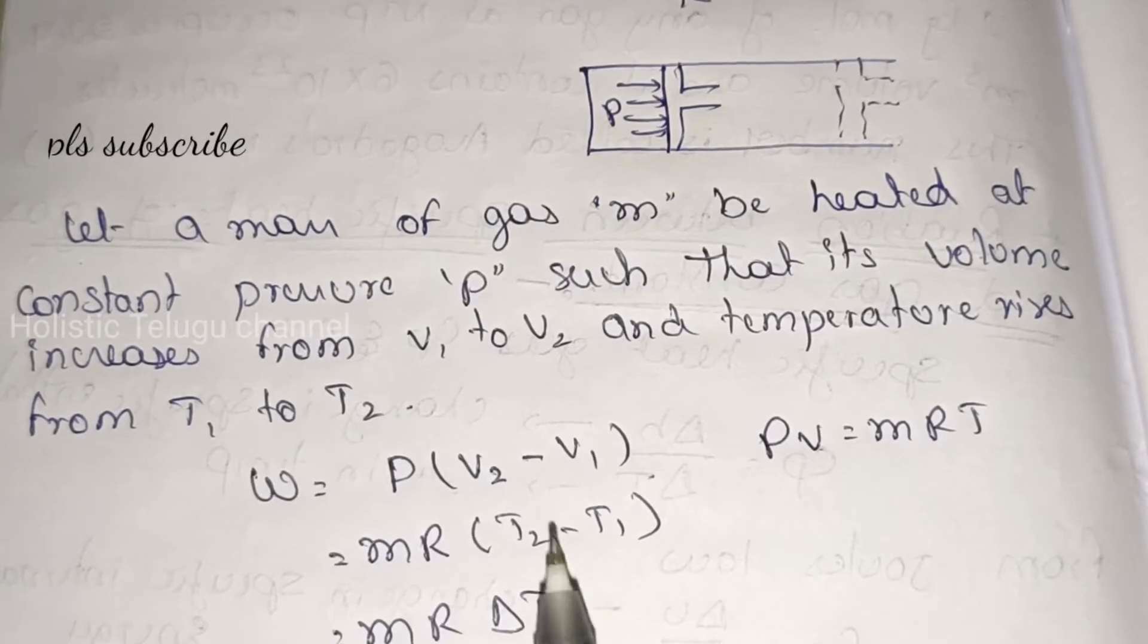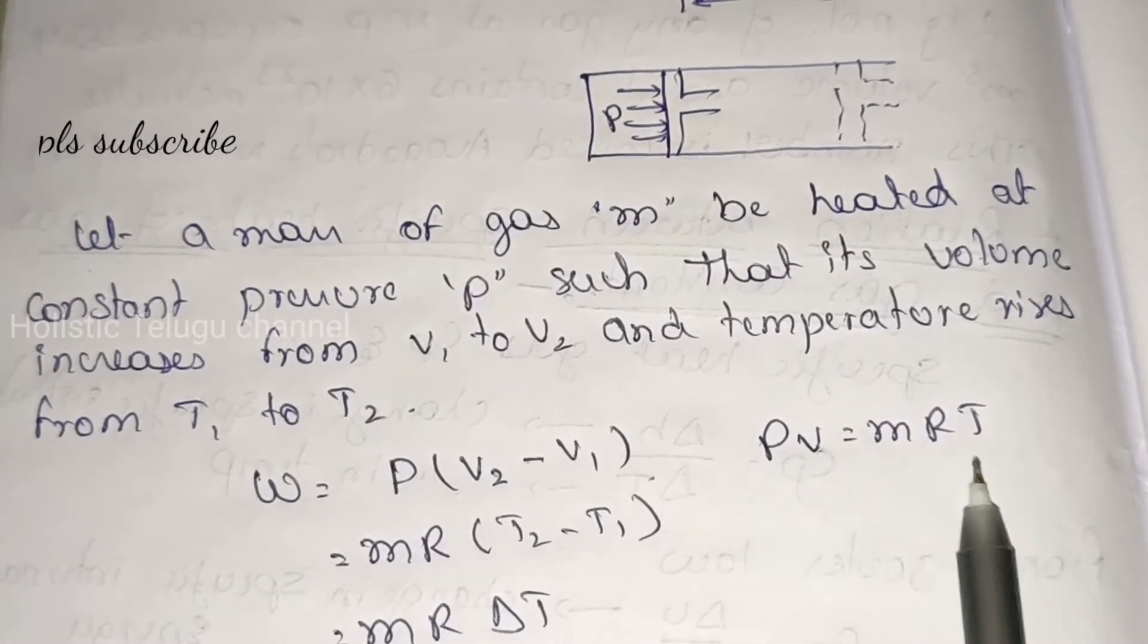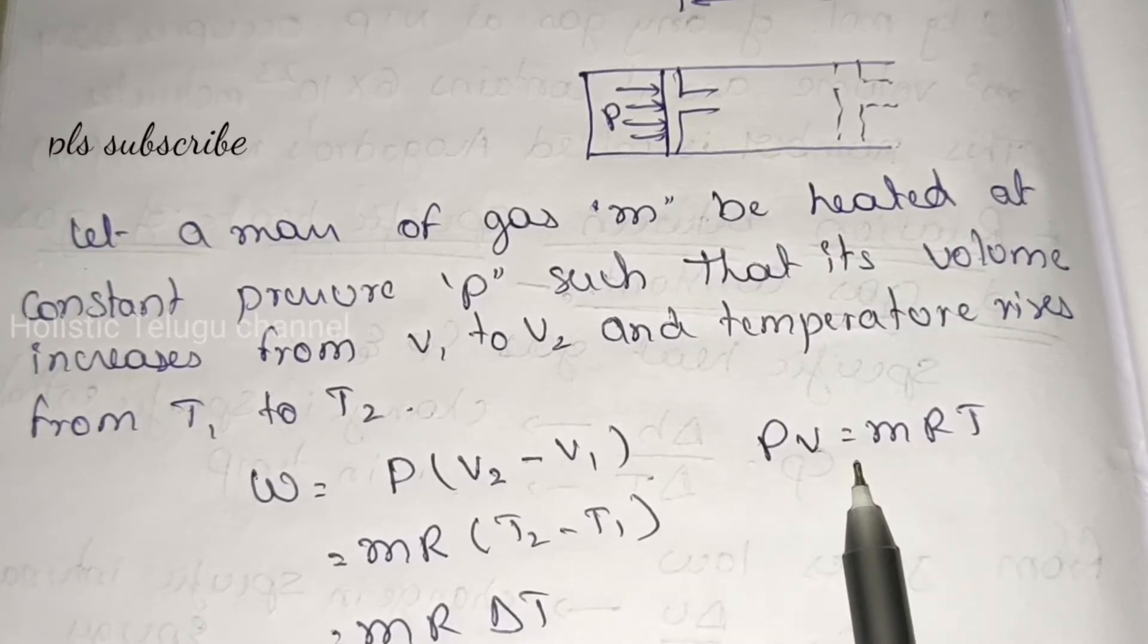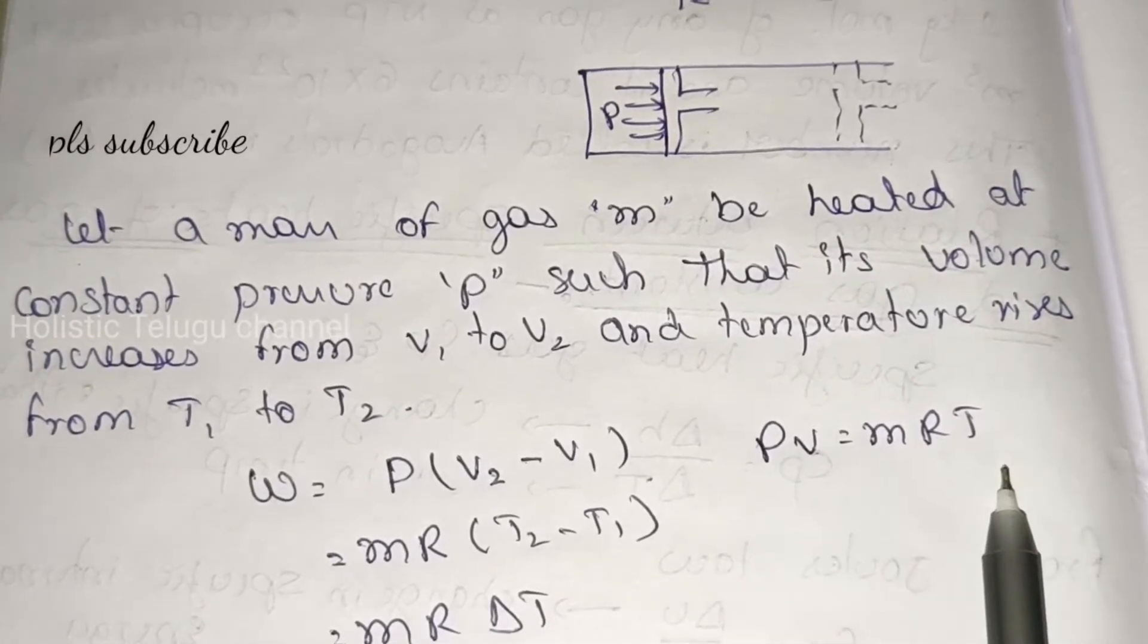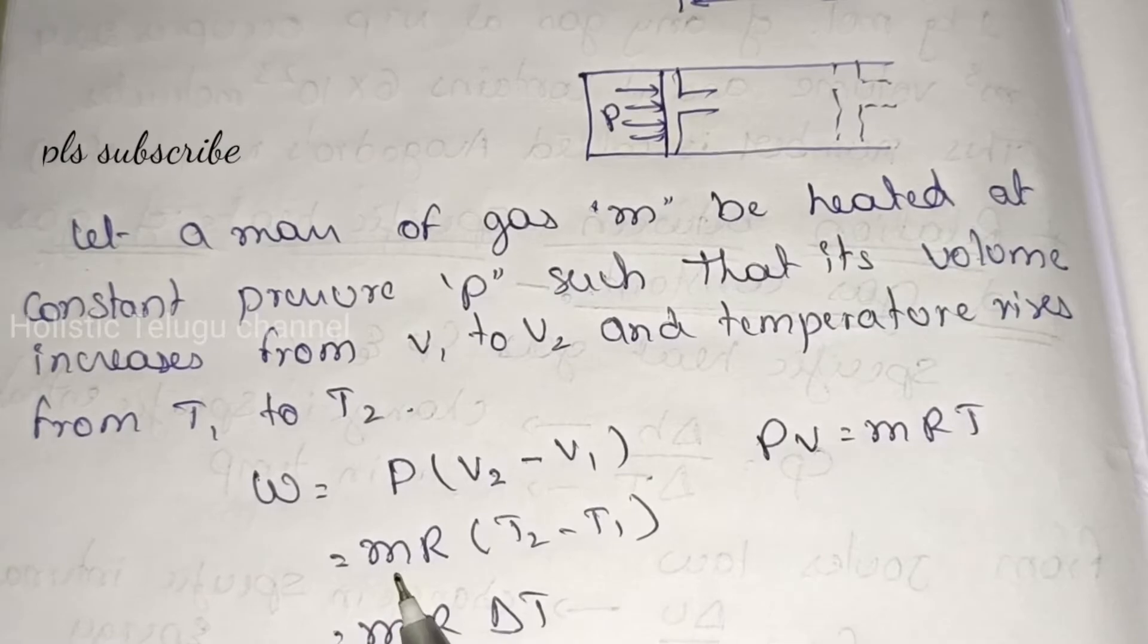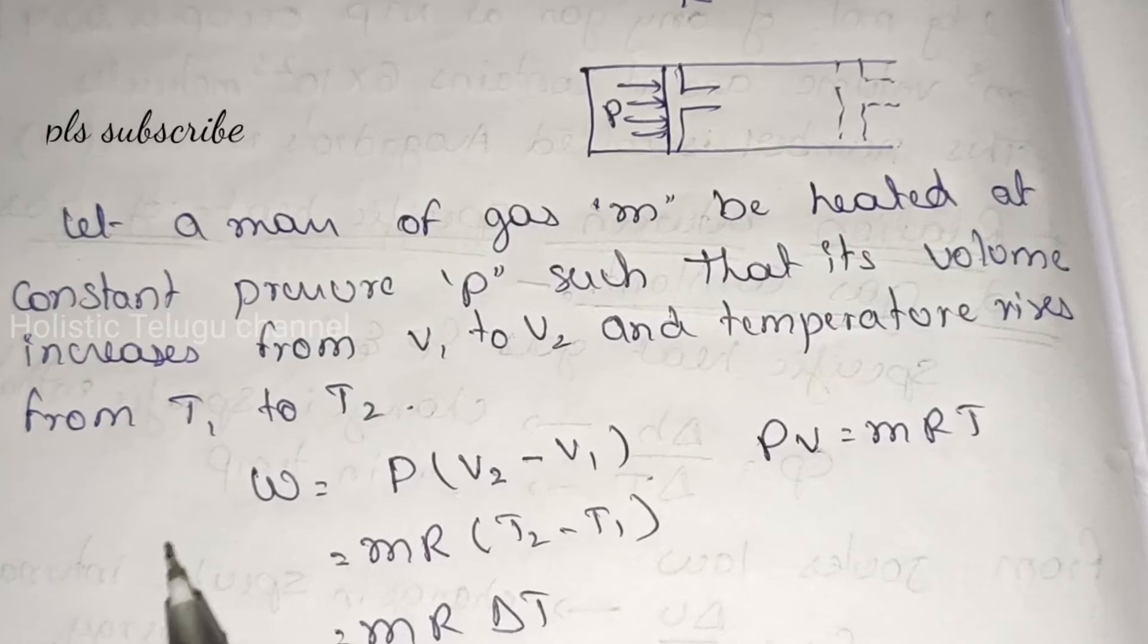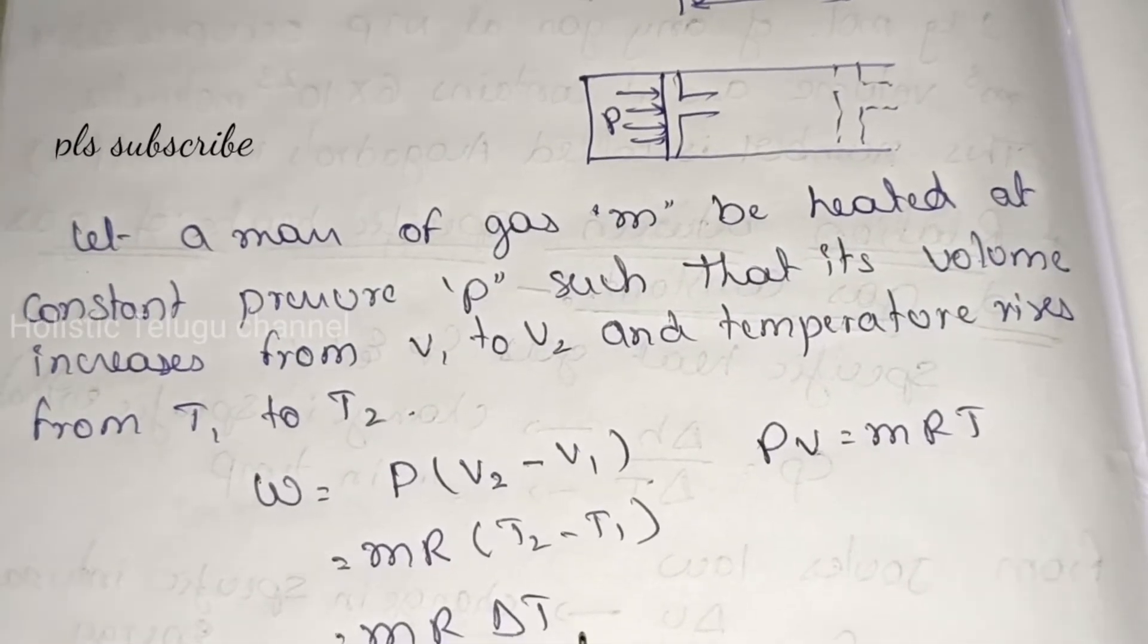So the work done is pressure times (V2 minus V1). From the equation PV equal to mRT, we can write work in terms of R. So work is m R (T2 minus T1), which is m R delta T.